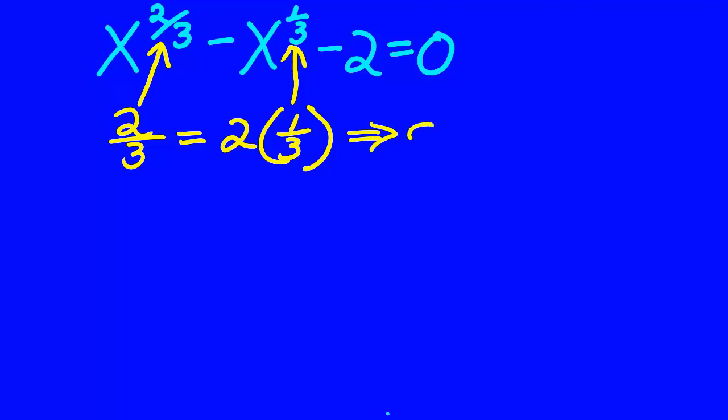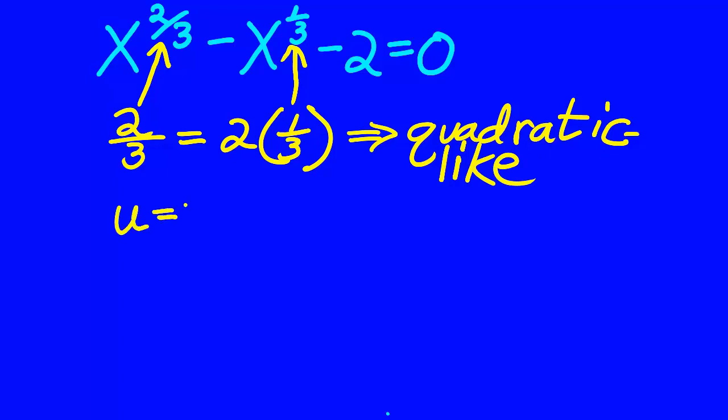x^(2/3) - x^(1/3) - 2 = 0 can be changed into quadratic form through u-substitution. So let u equal x^(1/3). Then u² will equal x^(1/3) squared.